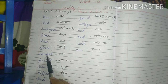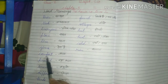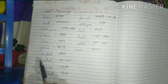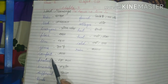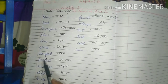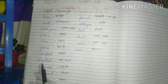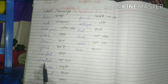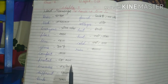COMFORT — C-O-M-F-O-R-T. Comfort means 'aaram' (rest/comfort). Wherever you go, when you come home you get comfort. Comfort means aaram. Next: PROTECT — P-R-O-T-E-C-T. Protect means 'raksha karna' (to protect).